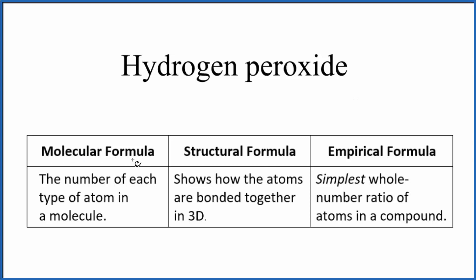Let's start with the molecular formula. That shows us the number and type of each atom in a molecule. So the molecular formula for hydrogen peroxide is H2O2. Two hydrogens, two oxygens. That's the molecular formula.